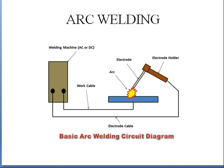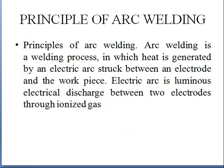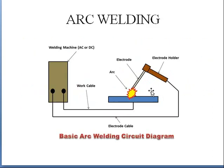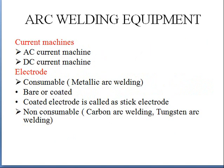In arc welding, you can use both AC and DC currents. The principle of arc welding: heat is generated by an electric arc struck between an electrode and the workpiece. An electric arc is a luminous electrical discharge between two electrodes through ionized gas. A spark generates between the electrode and workpiece due to the ionized gas present between them, which helps melt the metal or the electrode. Arc welding relies on ionization of gases between both electrodes.